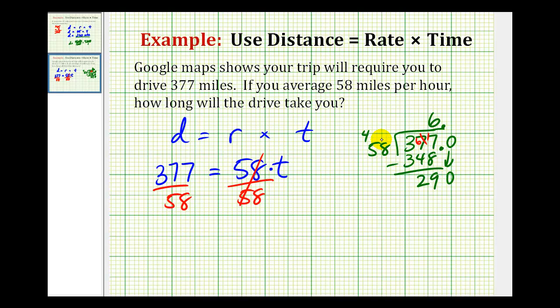And if we ask how many 58's in 290, that would be 5. 5 times 8 would be 40. Carry a 4. 5 times 5 is 25 plus 4 is 29. And this difference is now zero.